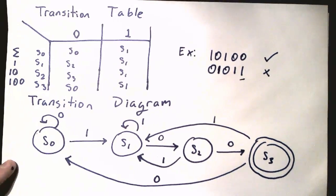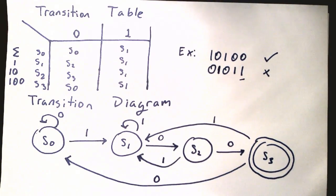And that in essence here is what the transition diagram is with the transition table and a little peek into what is automata theory, a small branch of computer science. And I hope you enjoyed.